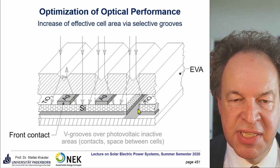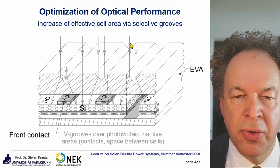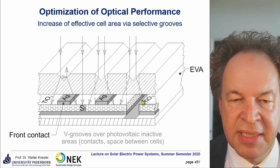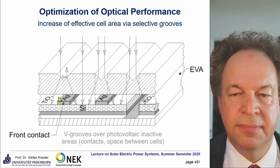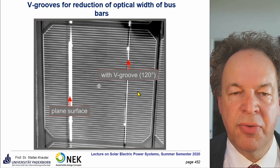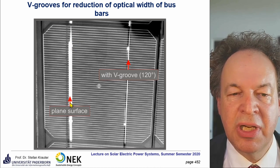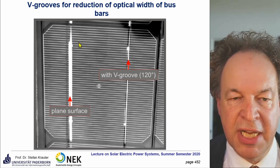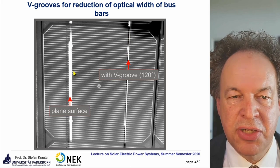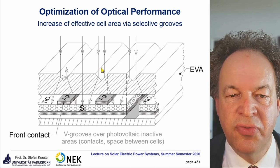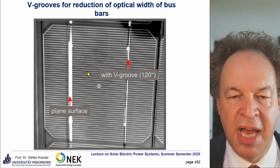In the example shown, on the right side a V-groove is applied on the glass, on the left side a flat surface. The front contact visually appears much thicker on the flat side but actually appears smaller on the V-groove side — this is just an optical effect due to the V-groove deflecting light away from the contacts. The contacts are actually the same size, but due to the V-groove and light deflection the contact appears much thinner. The V-groove angle is 120 degrees.